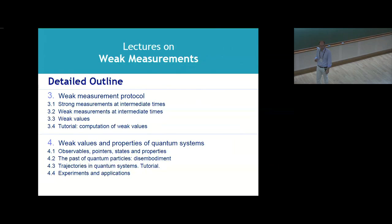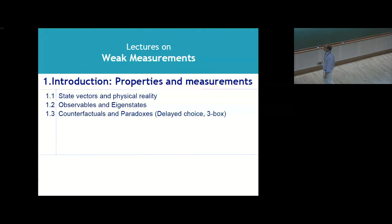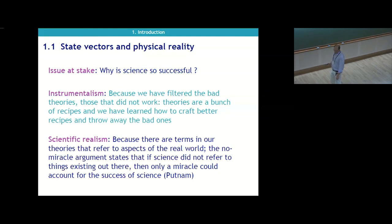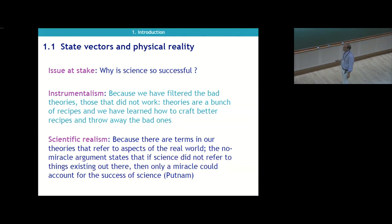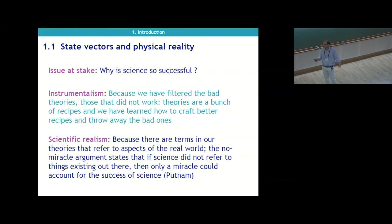I'll mention two approaches and see how weak measurements can allow you to measure these trajectories in some sense. From a very general backdrop, if we want to understand what lies beyond all these state vectors and property ascription, the question is: why is science so successful? From a pragmatic point of view, you can say we filtered the bad theories because they did not work, and basically theories are just a bunch of recipes — we learn how to craft better ones and throw away the bad ones.